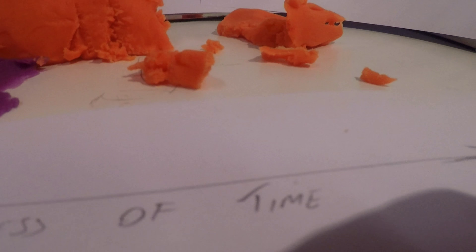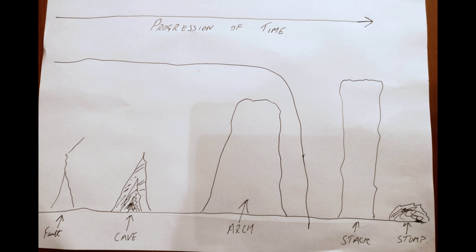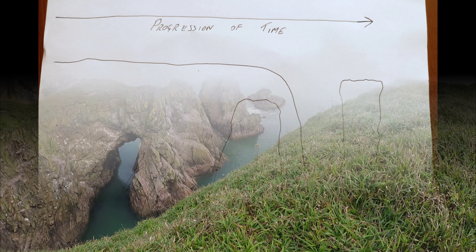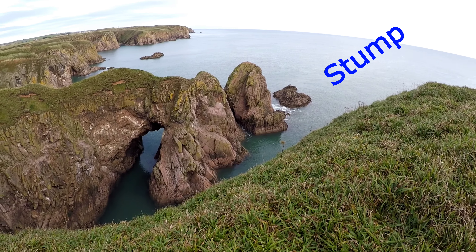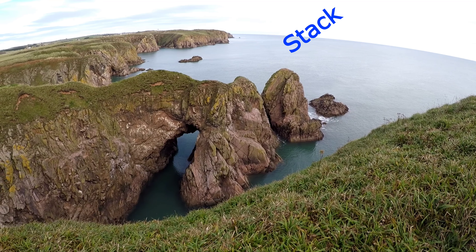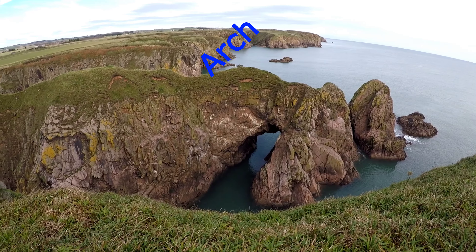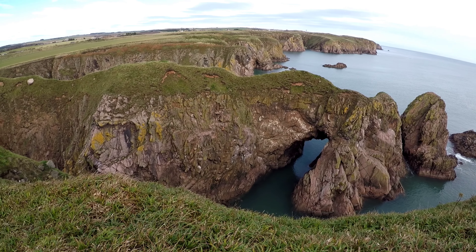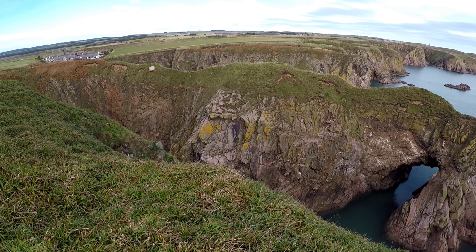This basic diagram is an easy way to show the passage of time and the stages which a headland goes through to form a stump. This is how our stump, Cairn na Burgh, has formed at the Bullers of Buchan. Now, in class, answer the exam style question: with the aid of a diagram, explain the formation of a coastal stump.